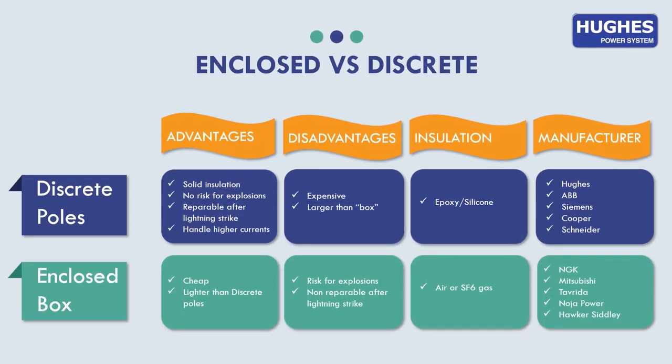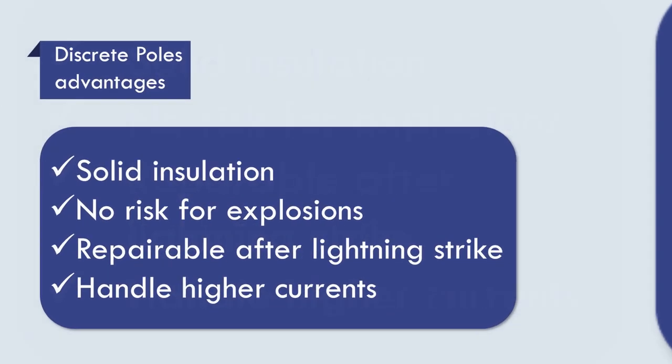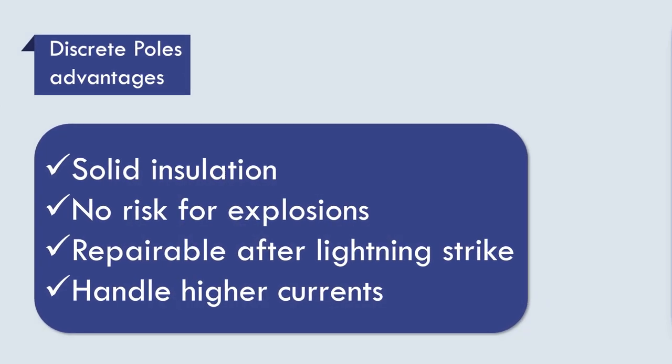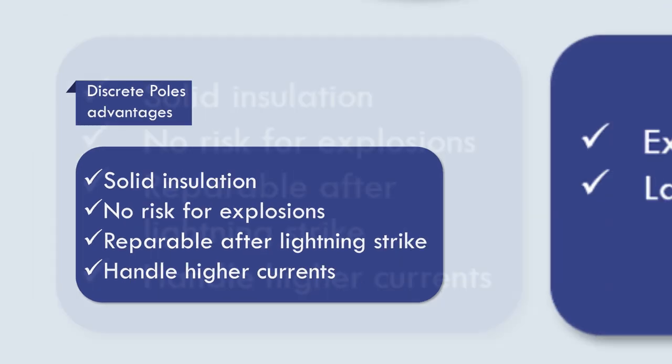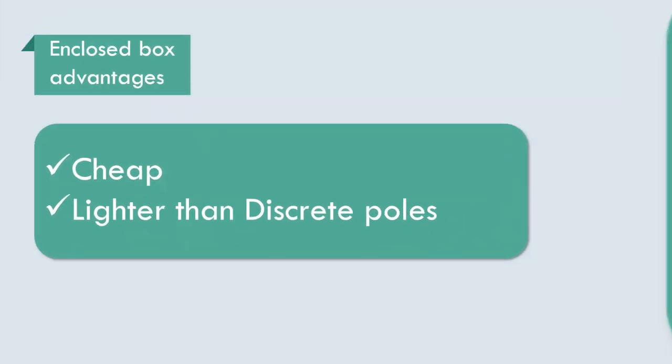Let's look at the comparison table for both types. First parameter is advantages of each type. Discrete poles' big advantage is that it is repairable or replaceable in case one of the poles is damaged. It has solid insulation, no risks for explosions, and can handle higher currents. Advantages of the enclosed box is that it is cheaper and lighter in weight.